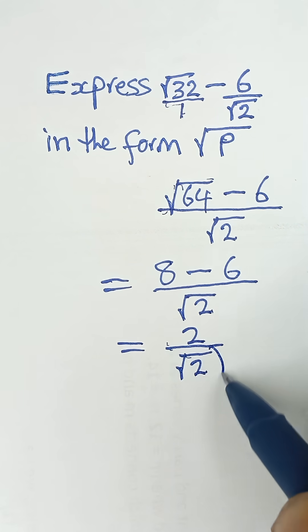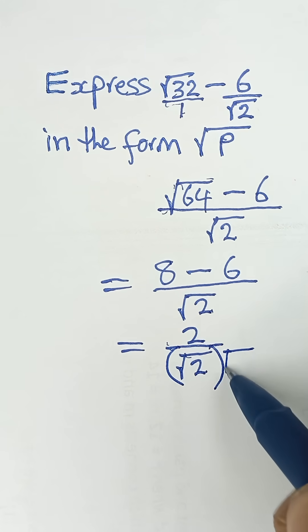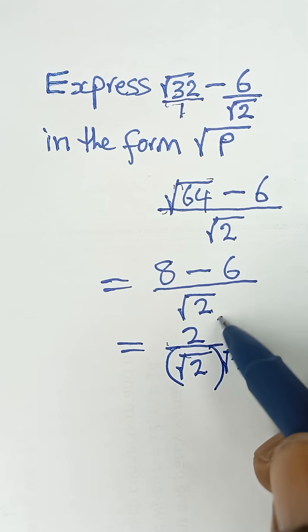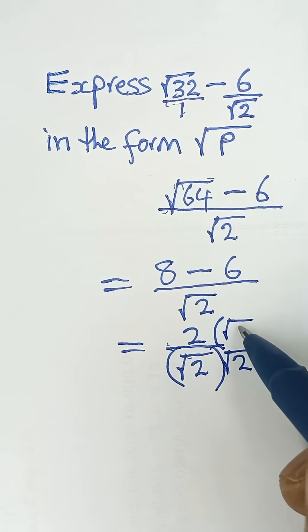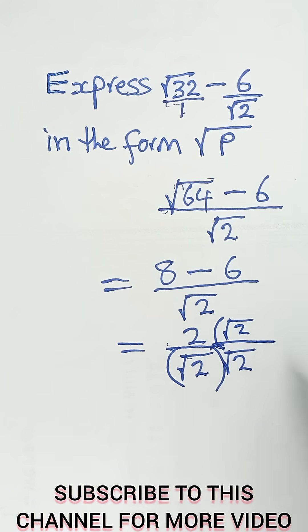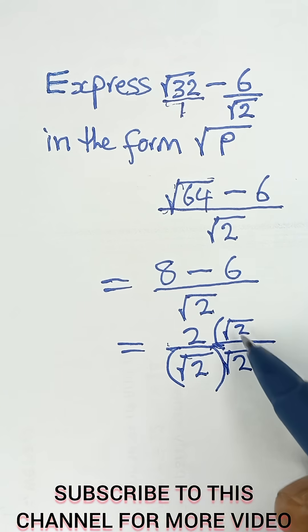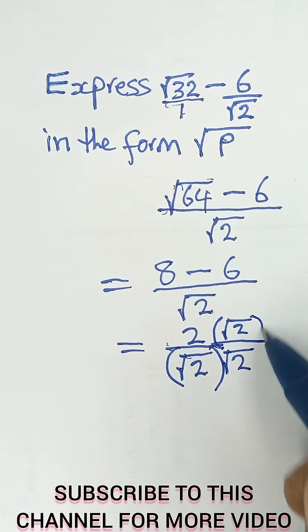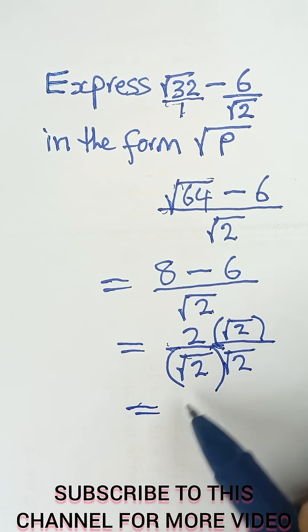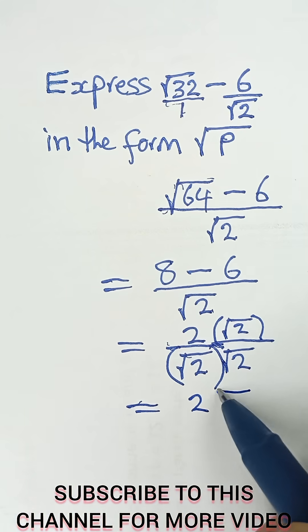In order to rationalize, we simply multiply this by itself, that is √2. And then we also do that to the denominator, multiplying it by √2. So 2 multiplied by √2 will simply give us 2√2.